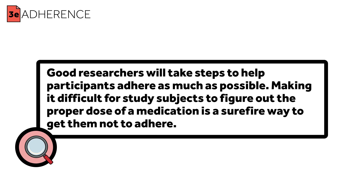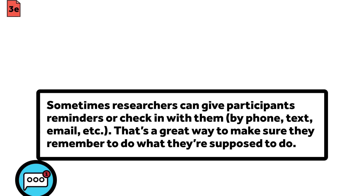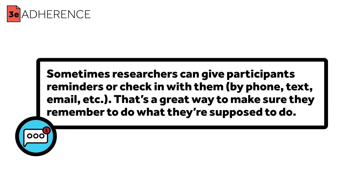Good researchers will take steps to help participants adhere as much as possible. Making it difficult for study subjects to figure out the proper dose of a medication is a surefire way to get them not to adhere. You want subjects to go to exercise classes? Make them free. Provide them with transportation. Arrange for childcare. Want them to adhere to a diet? You might consider giving them the food they need to eat, or at least great recipes, suggestions, or other things which might make the diet easier. Sometimes researchers can give participants reminders, or check in with them by phone, text, or email — a great way to make sure they keep appointments, don't run out of medications, or remember to do what they're supposed to.